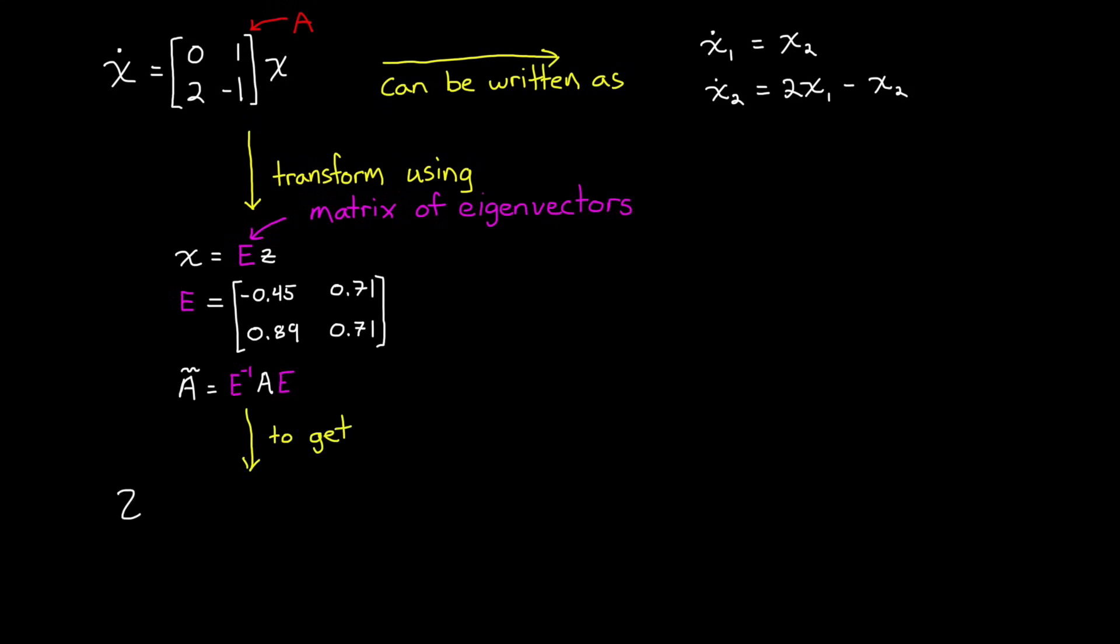And what we end up with after the transformation is a modified A matrix consisting of the complex eigenvalues along the diagonal and zeros everywhere else. Now, these two models represent the exact same system. They have the same eigenvalues and the same dynamics. It's just the second one is described using a set of state variables that change independently of each other.